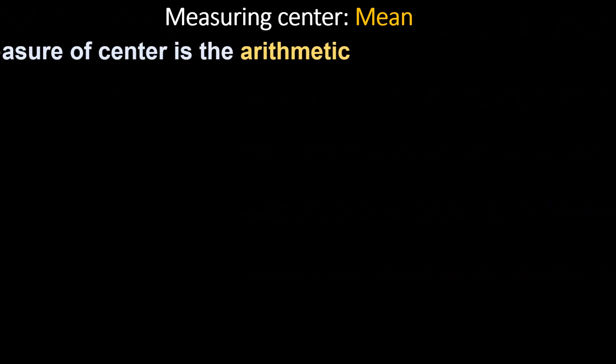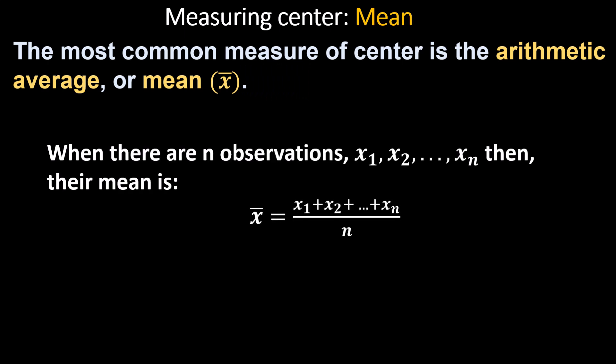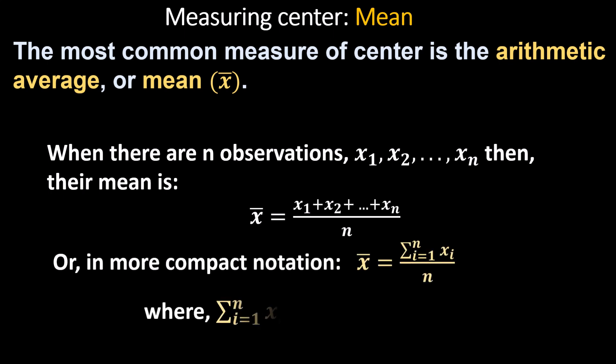What is the mean? Mean is also called the arithmetic average. The notation for the mean is x-bar. How do we find the mean? Suppose there are n observations, then get the sum of the observations and divide by the number of observations, which is n. We can write this in short: x-bar equals the sum from i equals 1 to n of x-sub-i, divided by n.